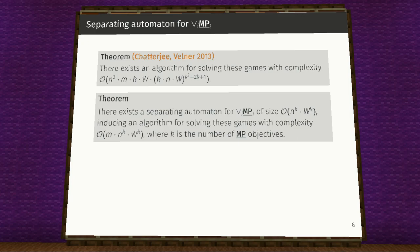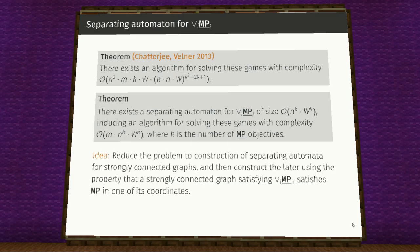We achieve this complexity by giving a separating automata of size O of N power K times W power K and the idea is to reduce the problem to construction of separating automata for a strongly connected graph and then to construct the latest using the property that a strongly connected graph satisfying this condition also satisfies mean payoff with infimum in one of its coordinates.